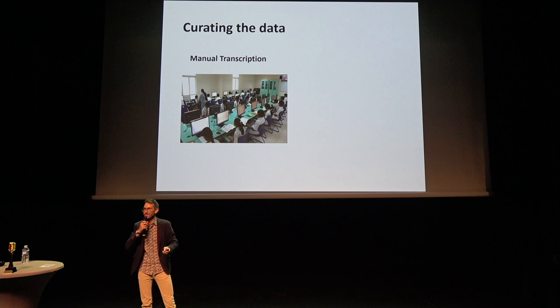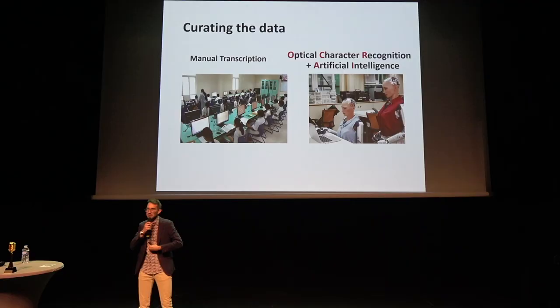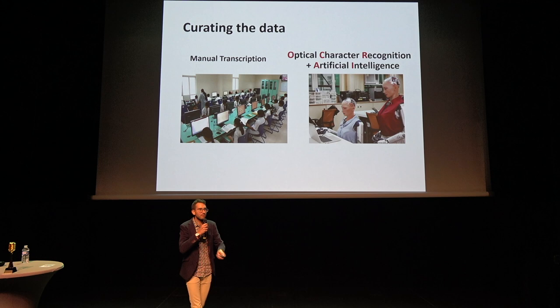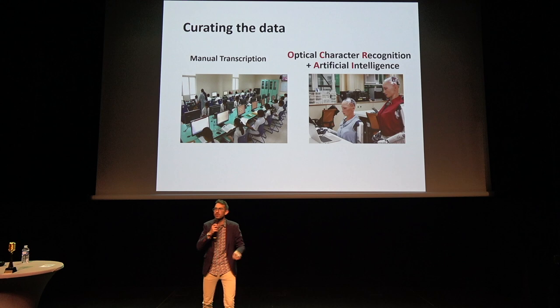Luckily, things have started to change. In the past couple of years, we now have a powerful ally — machines. We have software for optical character recognition and artificial intelligence that can go through the pixels of a picture and understand numbers and text, transcribing for us. Sometimes it makes errors, but we are humans — we can control the machine and improve the algorithm. Once you get it right, it's the same effort to curate one table of data or one million tables. This is revolutionizing our field.